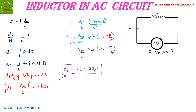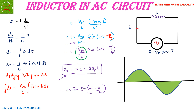We can write the final equation as i = Im sin(ωt − π/2), where Im = Vm / XL. The waveform is similar to what we saw with resistance — we get the voltage waveform — but the current has a phase difference of π/2. The current waveform starts after π/2, so the difference is π/2, and you can see the voltage is leading the current by π/2.